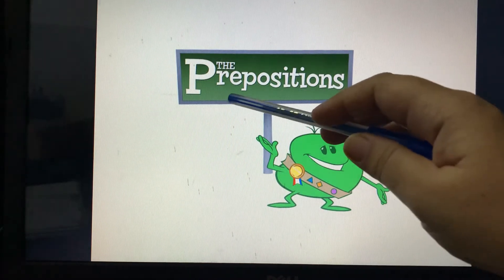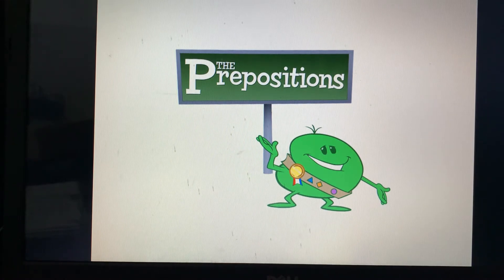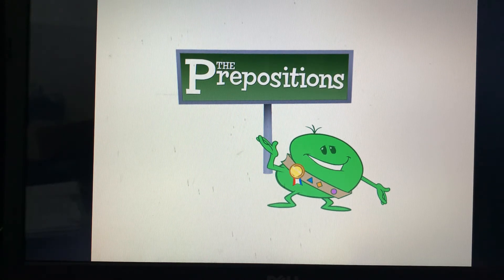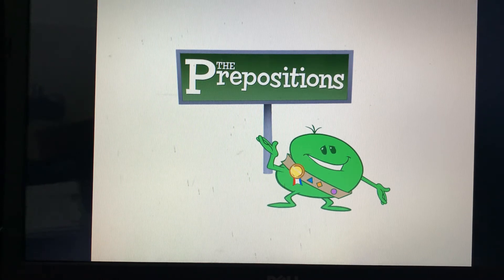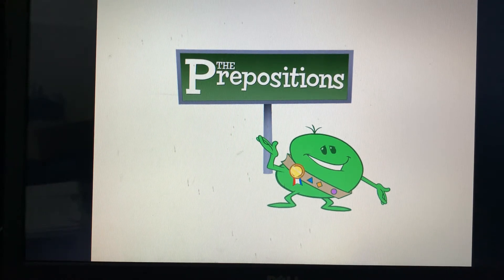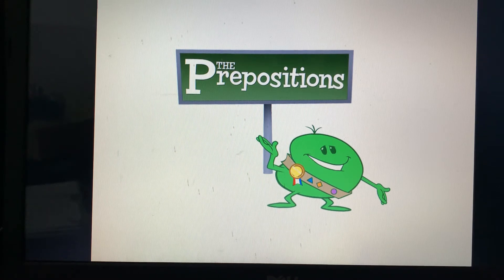What do you mean by preposition? Prepositions — 'position' means sthan (place). So it basically tells us the position of something — the position of a noun. Do you know what a noun is? Noun is the name of a person, place, animal, or thing. So preposition tells us where is the person, where is the place, where is the animal, or where is the thing. It basically tells us the position of something — kisih chiz ka sthan batata hai — that is preposition.